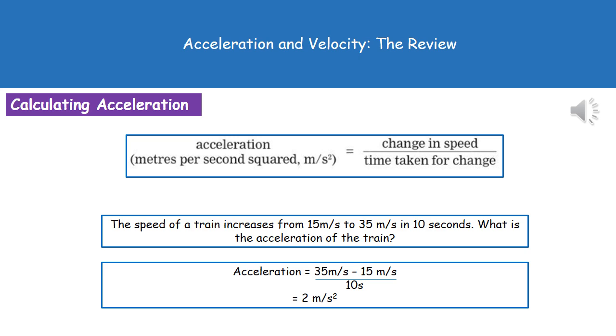The equation we need to calculate our acceleration is found on page 2 of your exam booklets. Acceleration, which has the units of meters per second squared, equals the change in speed divided by the time taken for the change. First thing to notice is it is the change in speed. Don't just look at the final speed. It's the difference between the speed the object starts at and the speed it finishes at.